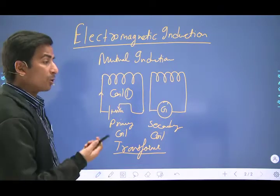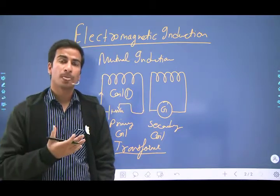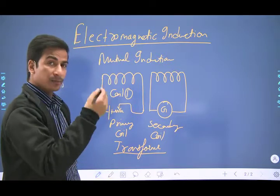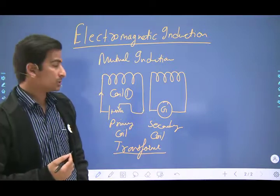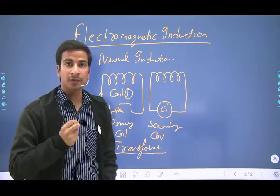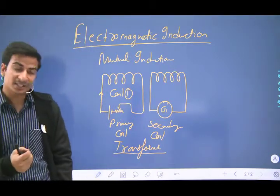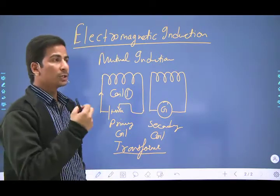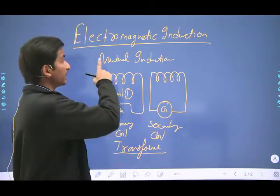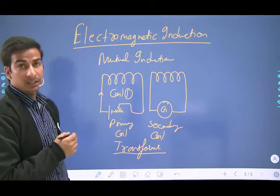The electricity which we are getting in our homes is alternating current because it is produced by electromagnetic induction. Magnet ke continuous motion hone ki wajah se, jo coil mein current ki direction hai, woh lagataar flip karti rehti hai — that's why you will get alternating poles and the direction of current flowing in the coil changes continuously. Alternating current can be moved very large distances — thousands of kilometers — without significant power loss, unlike direct current which drops very quickly with resistance. So electromagnetic induction is extremely important in our lives.